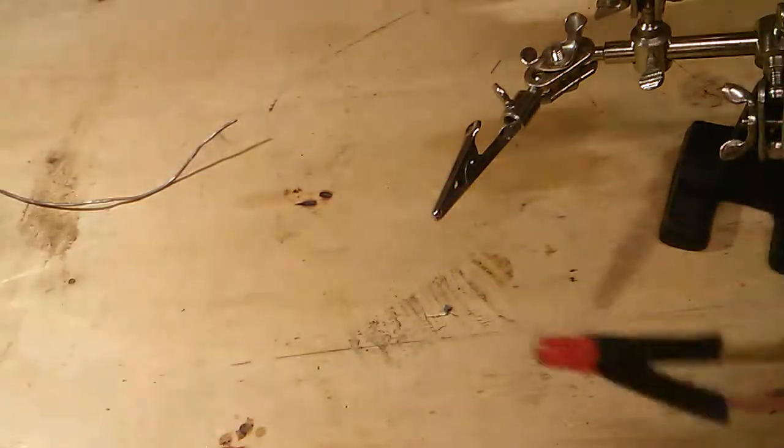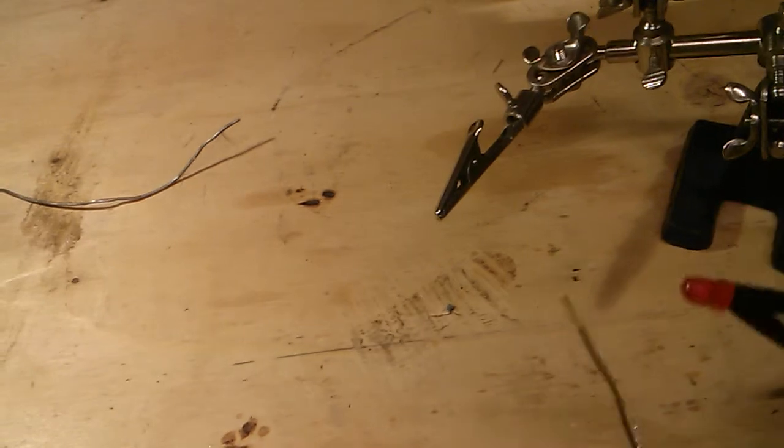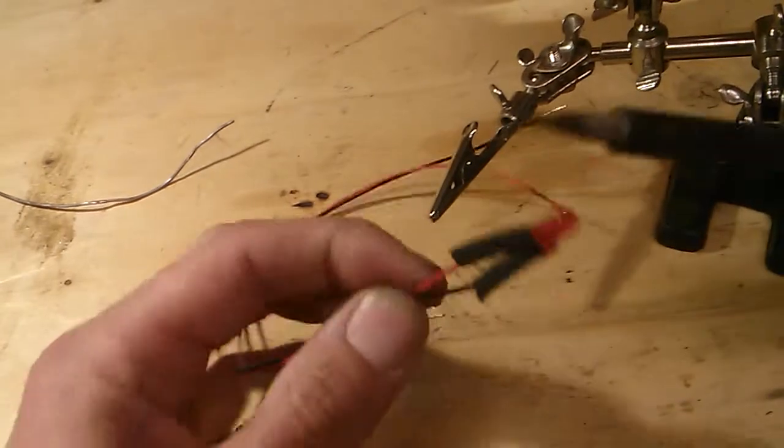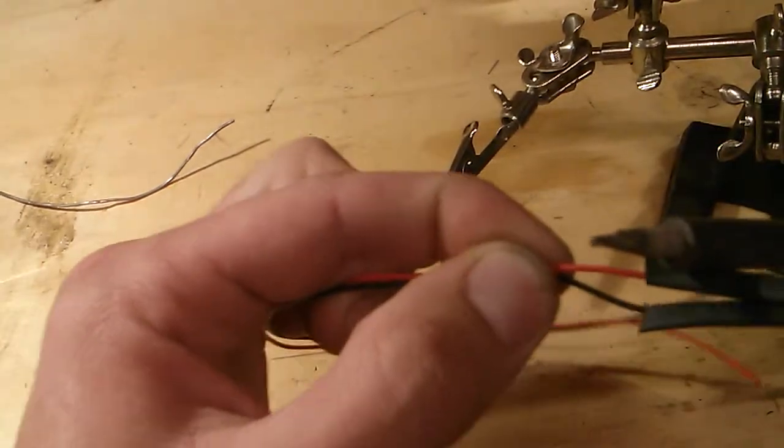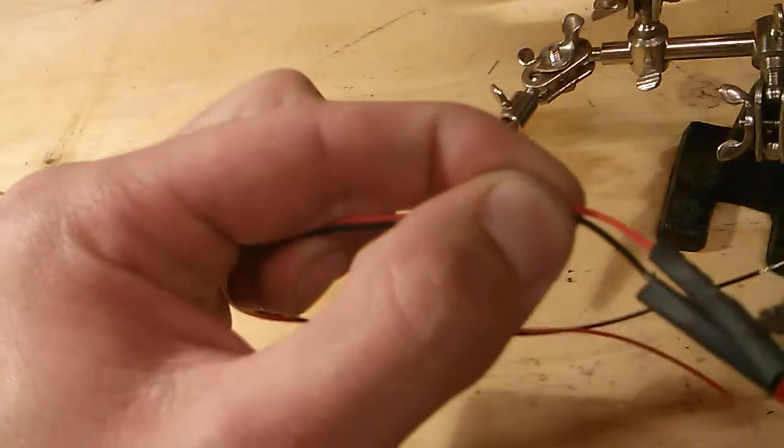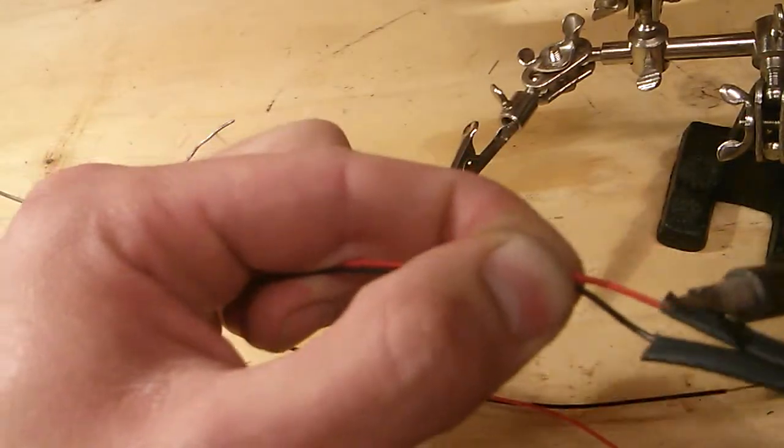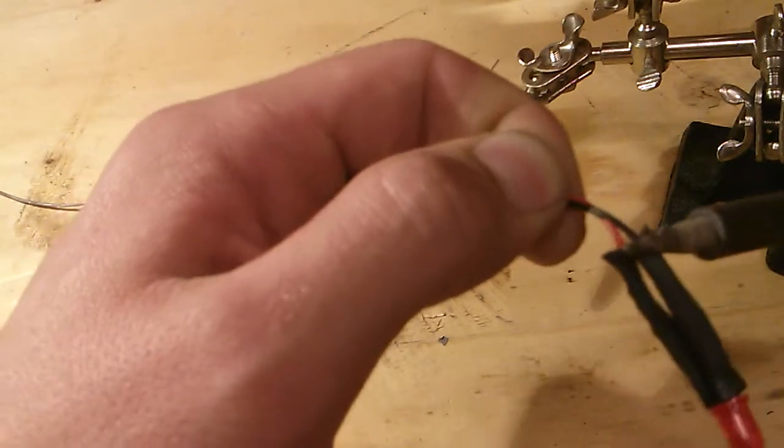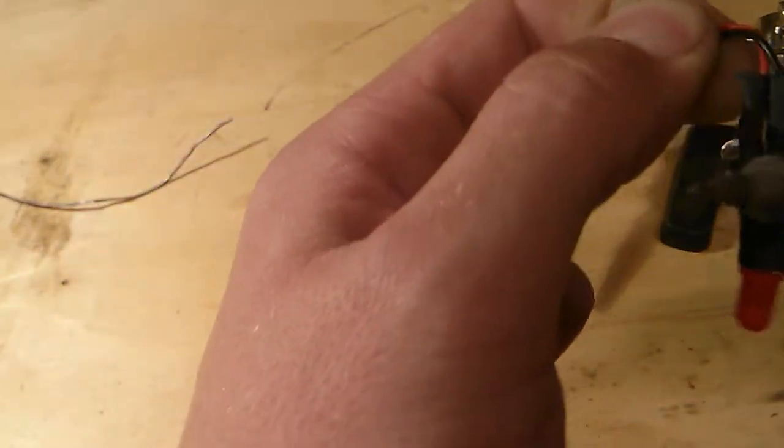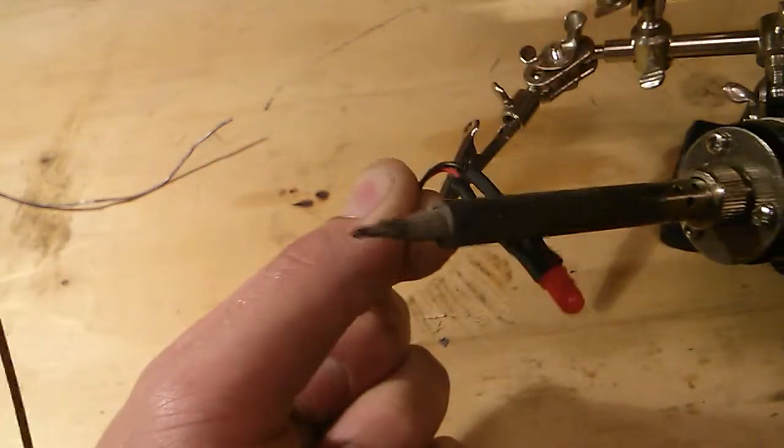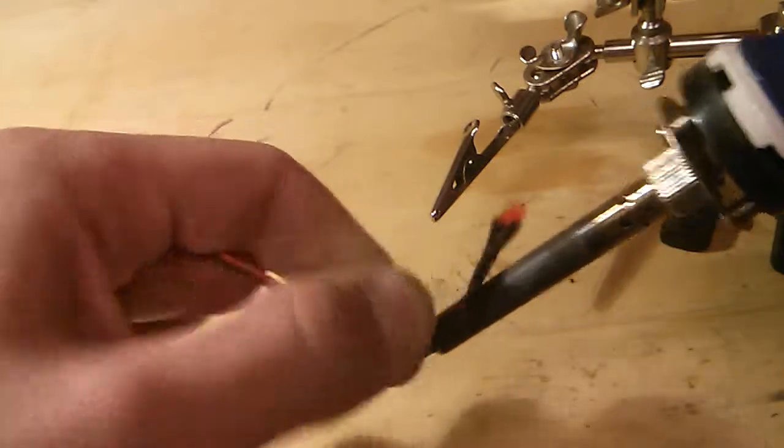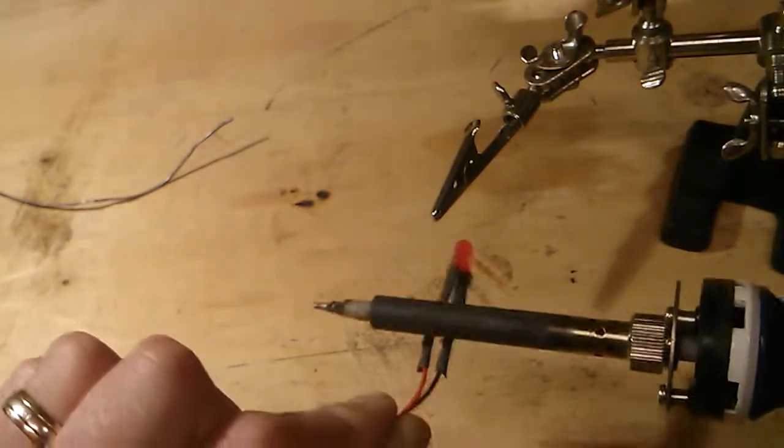And now we're going to shrink that. But I don't know where my heat gun is at the moment, so I'm sure you can imagine what the heat gun would do. Hold it over the heat gun. I'm just going to use the soldering iron to do the same job. Heat gun's a lot quicker, so shrink the tubing down. I hope that's on the camera. Trust me, it's a lot quicker with the heat gun.